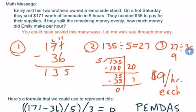Then, I'm going to divide the twenty-seven by the three people, Emily and her two brothers. That gives me three people. If I do that, simple math fact, it gives me nine. So how much did Emily make per hour? Nine dollars each hour.